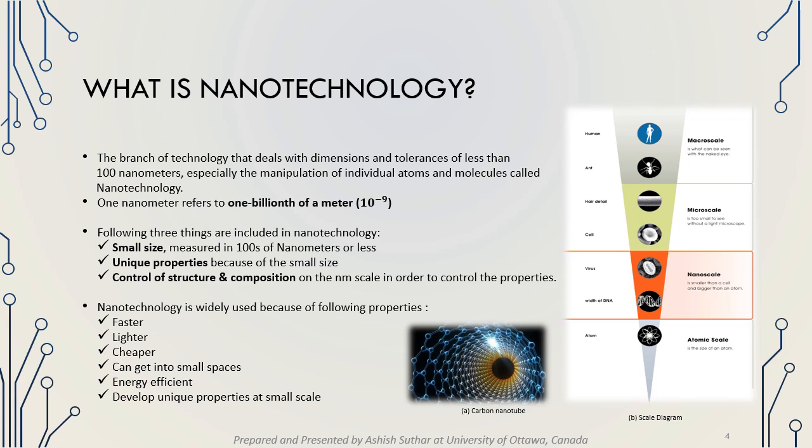This scalar diagram starts with the macroscale, where the human eye can see materials directly. It is followed by the microscale — hair and a cell are part of this scale, which a human eye cannot see directly, requiring a microscope. At the nanoscale, viruses and human DNA are part of this scale, which are bigger than atoms. Finally, at the atomic scale, individual atoms are represented.